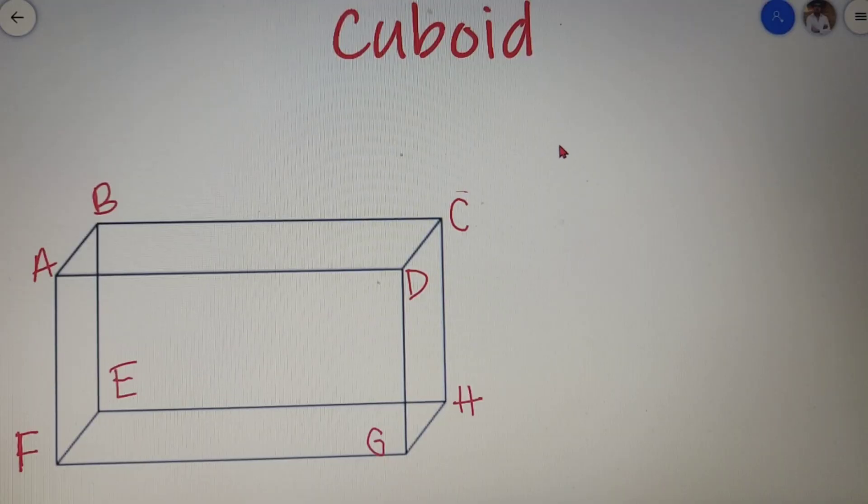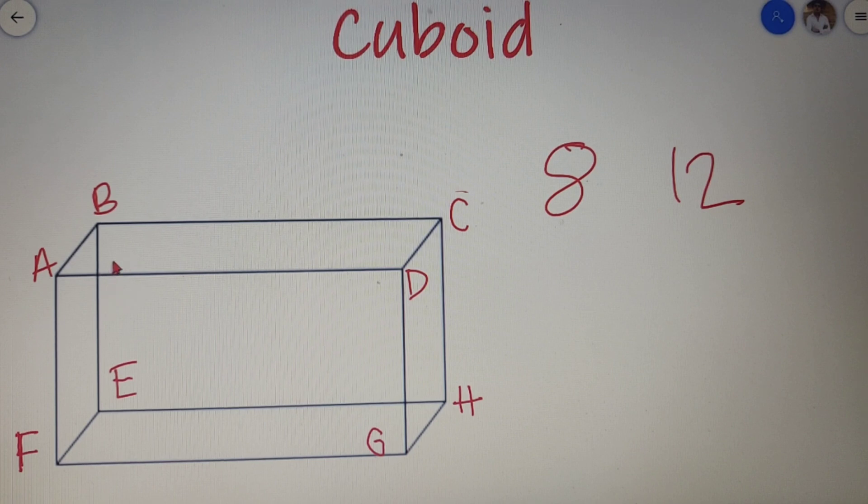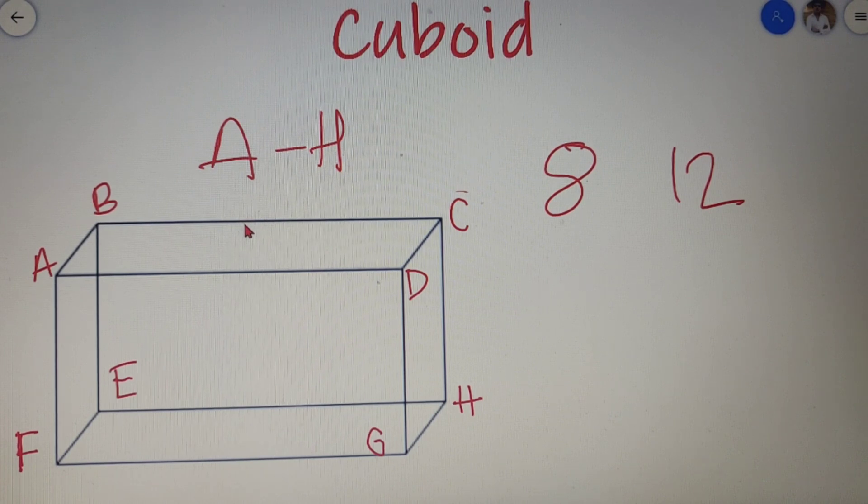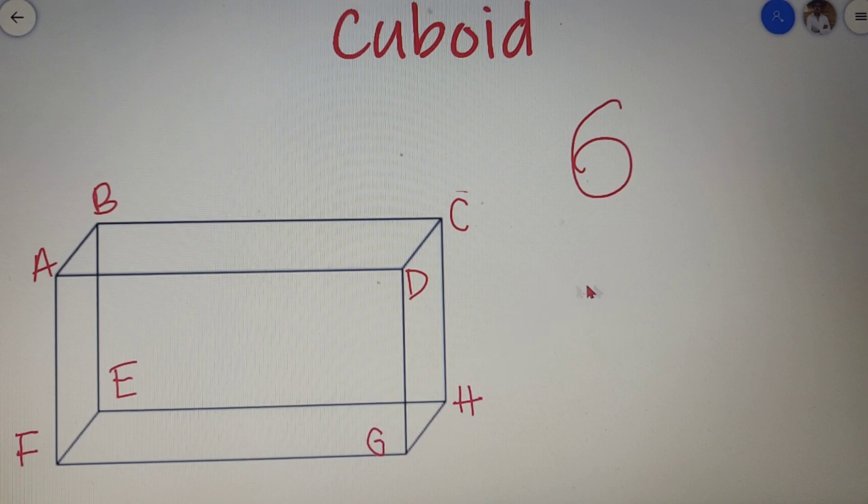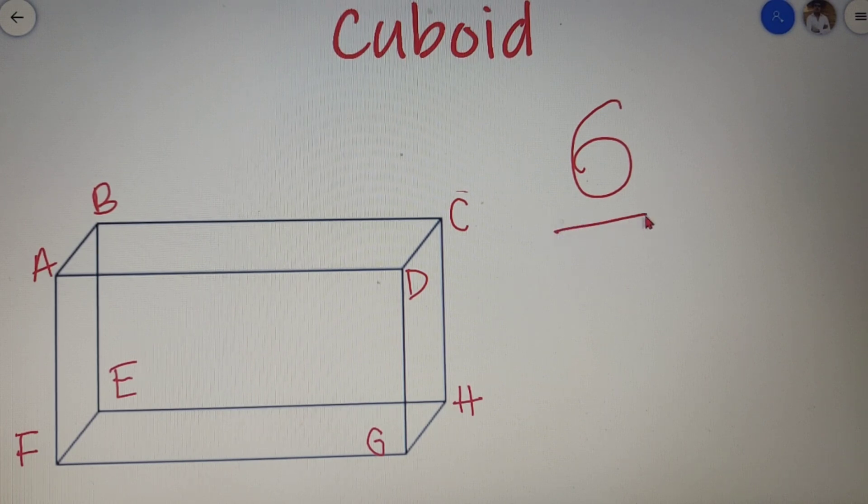Now similar to that of a cube, a cuboid has eight vertices and 12 edges. So you can see that we have eight vertices starting from A and going all the way up to H, and you can also see that we have 12 edges for example AD, BC, CD and so on. A cuboid has six faces as well. So ADFG is one face, DCGH is another face, ABCD is another face and so on. So a cuboid is made up of six faces.